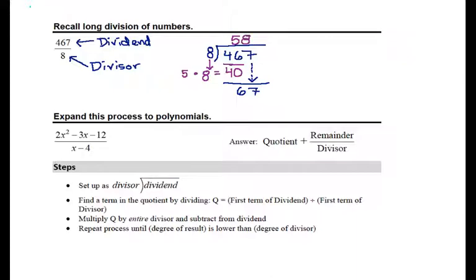and below the 67, we will write the 8 that we just found, times the 8 that is the divisor, so this is the same 8 each time, which is equal to 64, and then we subtract.